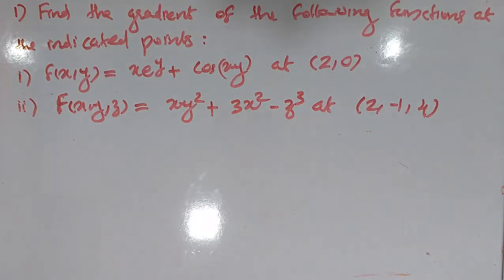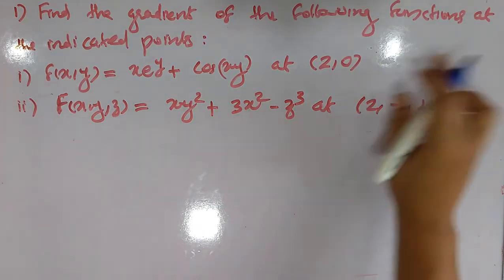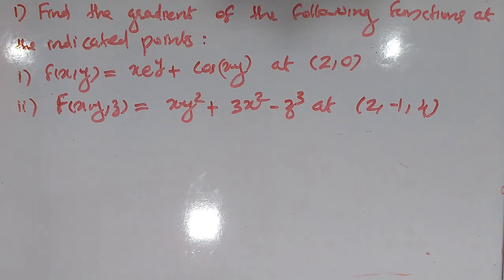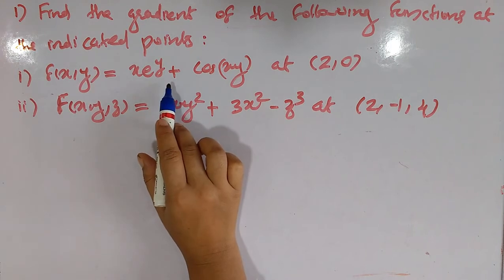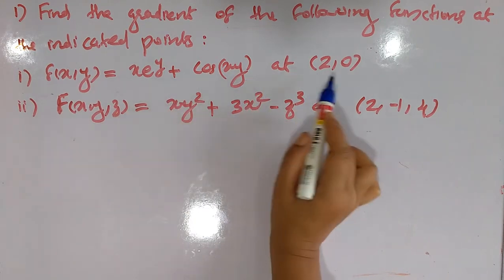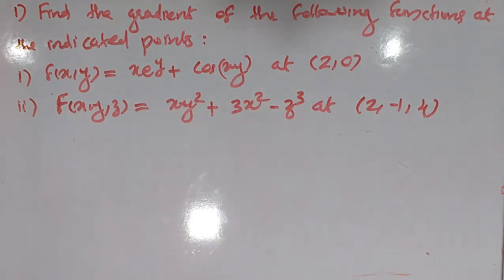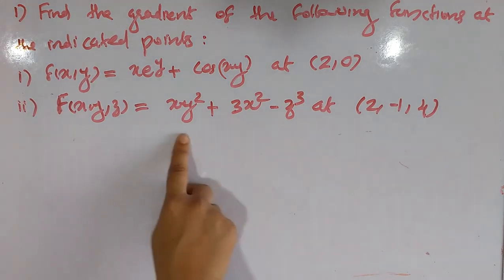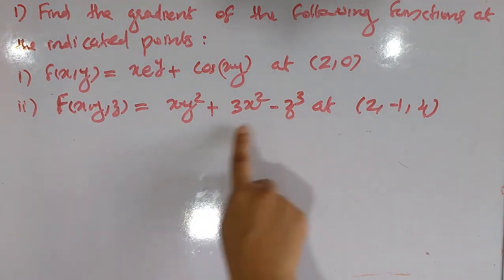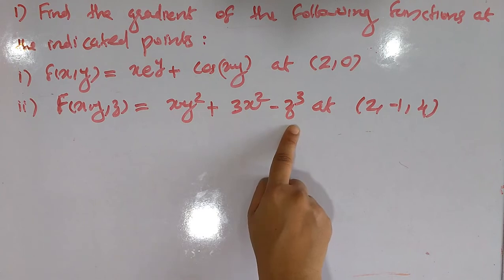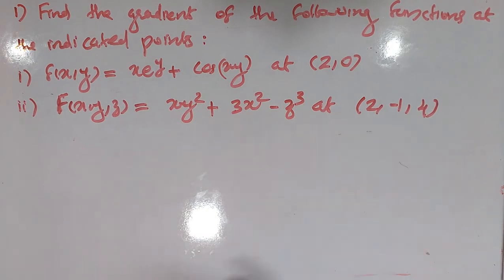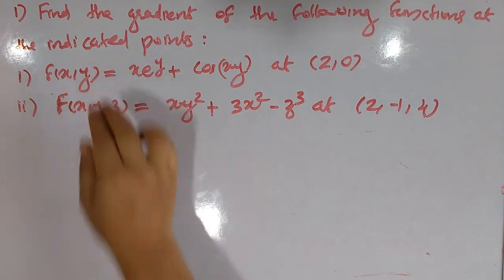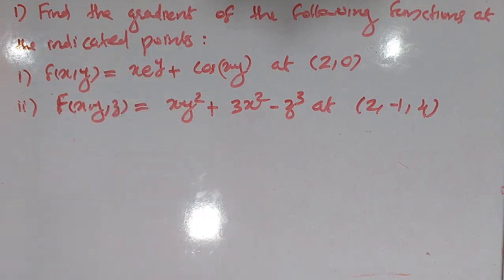One problem: find the gradient of the following functions at the indicated points. First: f(x,y) equals x e raised to y plus cos(xy) at the point (2, 0). Second: f(x,y,z) equals xy squared plus 3x squared minus z cubed at the point (2, minus 1, 4). We have a two-variable function and a three-variable function.